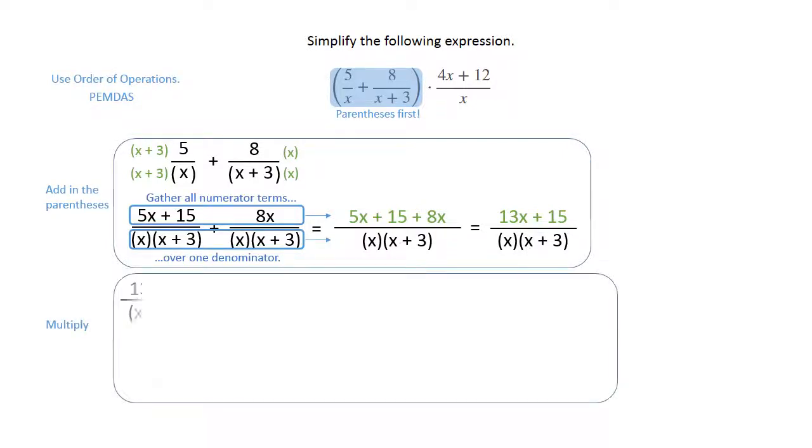We're going to take the new expression we found, 13x plus 15 over x times x plus 3, and multiply that with 4x plus 12 over x from the original expression. In order to multiply, we're going to break everything down, and the only thing I see that we can factor is 4x plus 12.